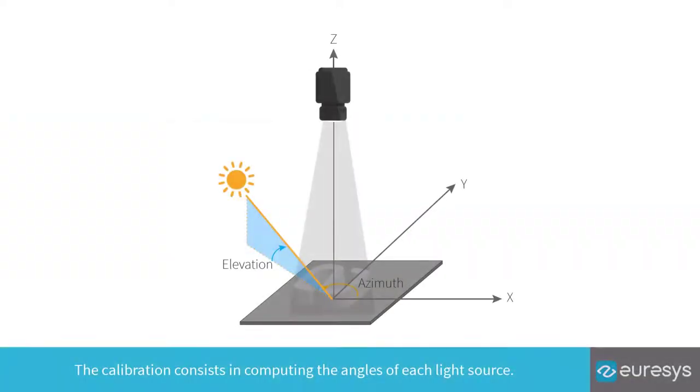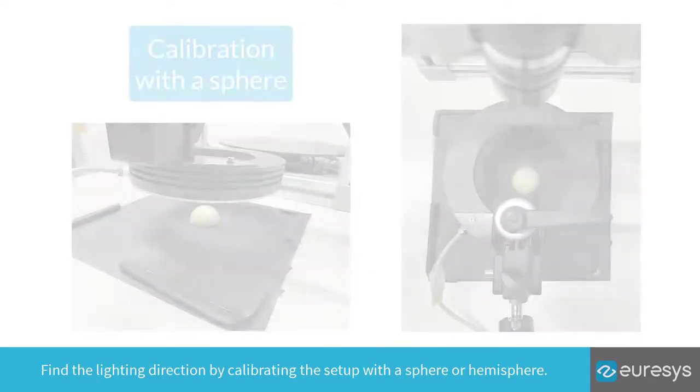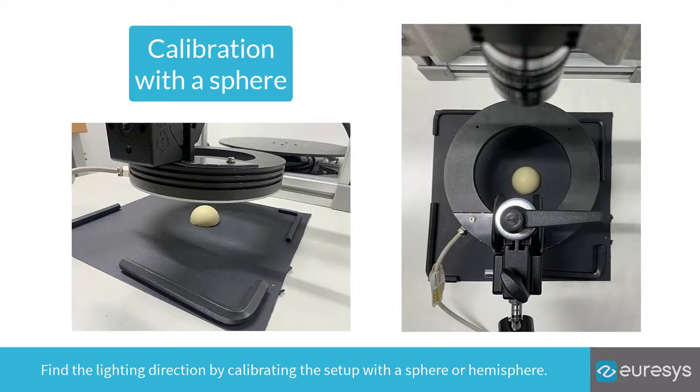Calibration Process. The calibration consists in computing the angles of each light source. Find the lighting direction by calibrating the setup with a sphere or hemisphere.